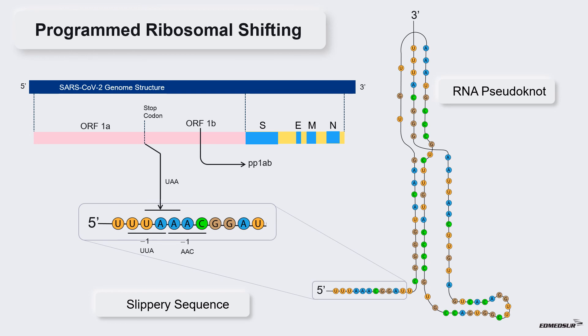The frequency with which the frameshift event occurs is increased because just downstream of that slippery sequence is a highly stable RNA structure called as RNA pseudoknot structure. It causes the ribosome to pause over the slippery sequence which increases the chances that it will slip back out of frame. This way, the slippery sequence and RNA pseudoknot structure are together responsible for programmed ribosome frameshifting event.